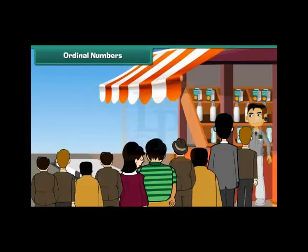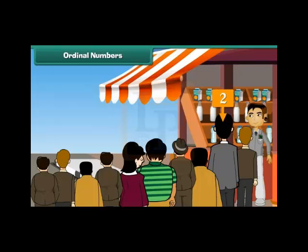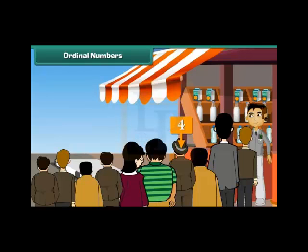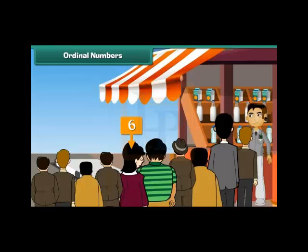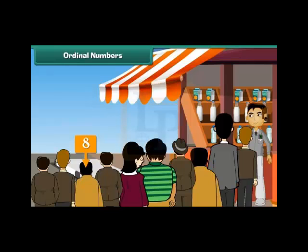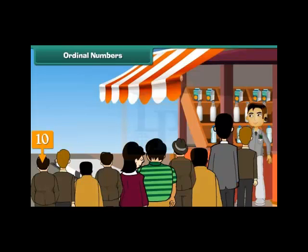Ordinal numbers. The person standing at position 3 is 3rd. The person standing at position 4 is 4th. The person standing at position 5 is 5th. The person standing at position 6 is 6th. The person standing at position 7 is 7th. The person standing at position 8 is 8th. The person standing at position 9 is 9th. The person standing at position 10 is 10th.